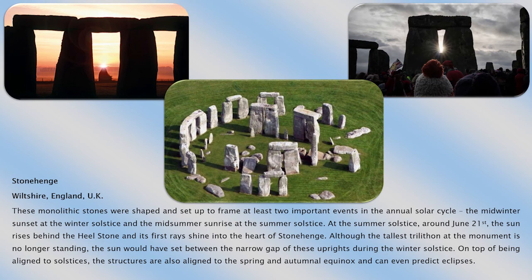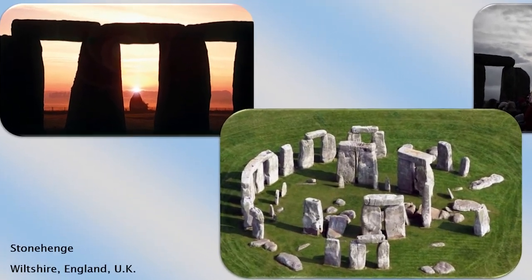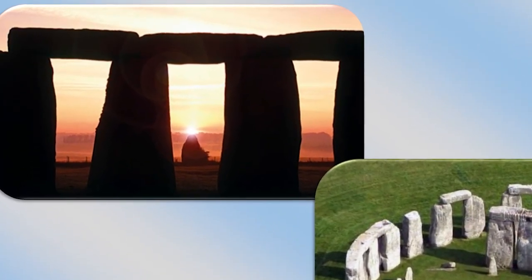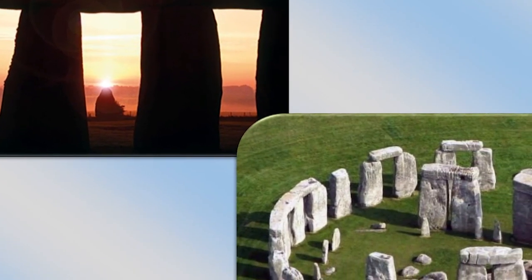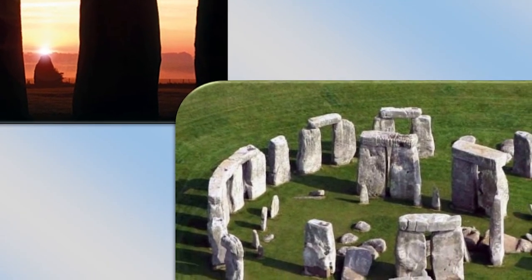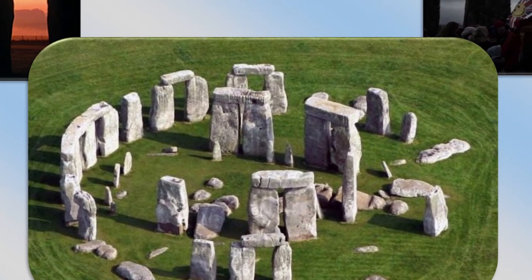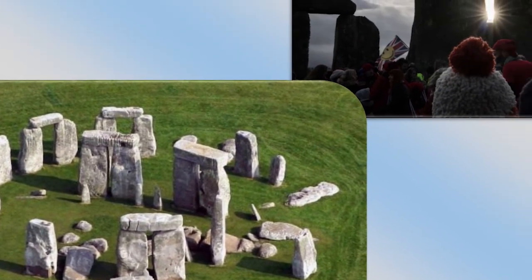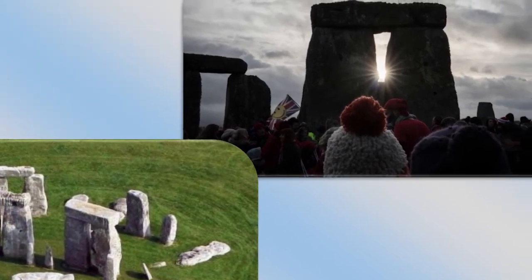The next solstice site is Stonehenge in Wiltshire, England. These monolithic stones were shaped and set up to frame at least two important events in the annual solar cycle: the midwinter sunset at the winter solstice and the midsummer sunrise at the summer solstice. At the summer solstice around June 21st, the sun rises behind the heel stone and its first rays shine into the heart of Stonehenge. On top of being aligned to solstices, the structures are also aligned to the spring and autumnal equinox and can even predict eclipses.